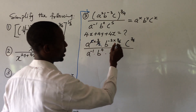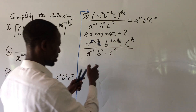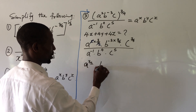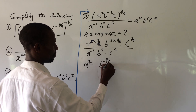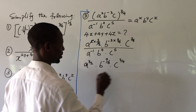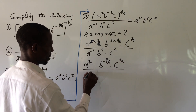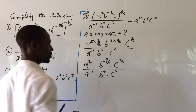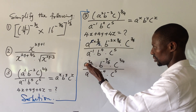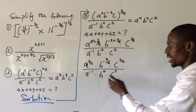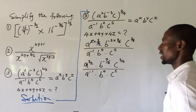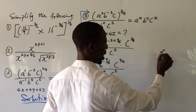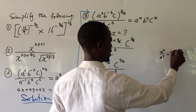The 2 cancels with 4 leaving 2, so we now have: a to the power of 3 over 2, times b to the power of minus 9 over 4, times c to the power of 3 over 4, all over a to the power of minus 1, times b to the power of 4, times c to the power of 5. We have a at the top and a at the bottom, b here and b here, c here and c here. We apply the division law of indices: a to the power of x divided by a to the power of y equals a to the power of x minus y.